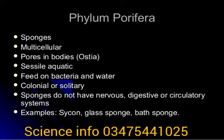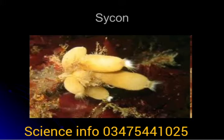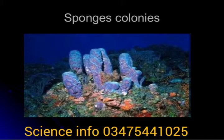Sponges have a body wall called pinacoderm, made of pinacocytes. The inner layer is choanoderm. They have a single cavity inside the body called the spongocoel. The pores through which water enters are called ostia, and water leaves the body through the pore called the osculum. They have no respiratory or circulatory system.